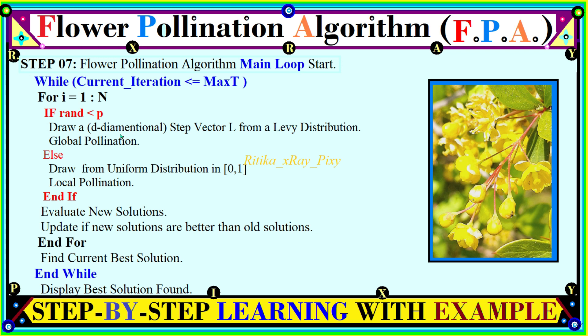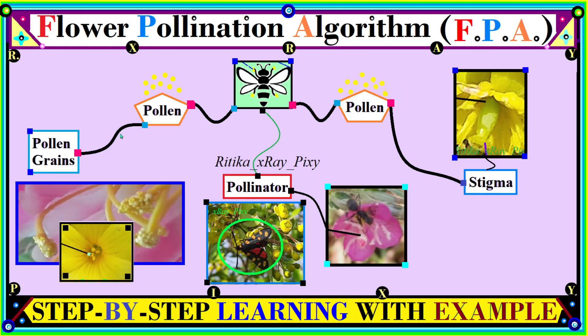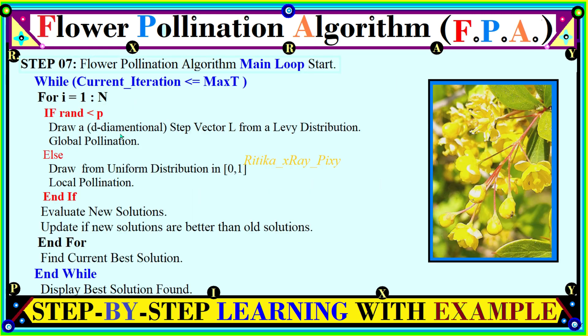R is a normally distributed random number. In cross-pollination, pollinators are required and move from one flower to another. In this algorithm, we use Lévy flight, or Lévy distribution, to calculate the step size for the pollinators. In local pollination (self-pollination), no pollinators are required. After that, we evaluate the new solution and check whether the new solutions are better than the previous ones, then find and display the best solution.